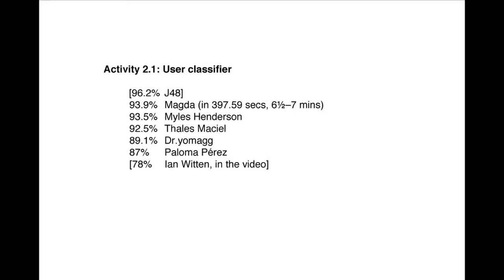Here's the league table for the user classifier. J48 gets 96.2 as a reference point. Magna did really well — got very close to that at 93.9%; it took her 6.5 to 7 minutes according to the script she mailed in. Myles did pretty well at 93.5%. In the class, I got 78% in just a few seconds. I think if you get over 90%, you're doing pretty well on this data set for the user classifier. Anyway, the point is not really to get a good result — it's to think about the process of classification.